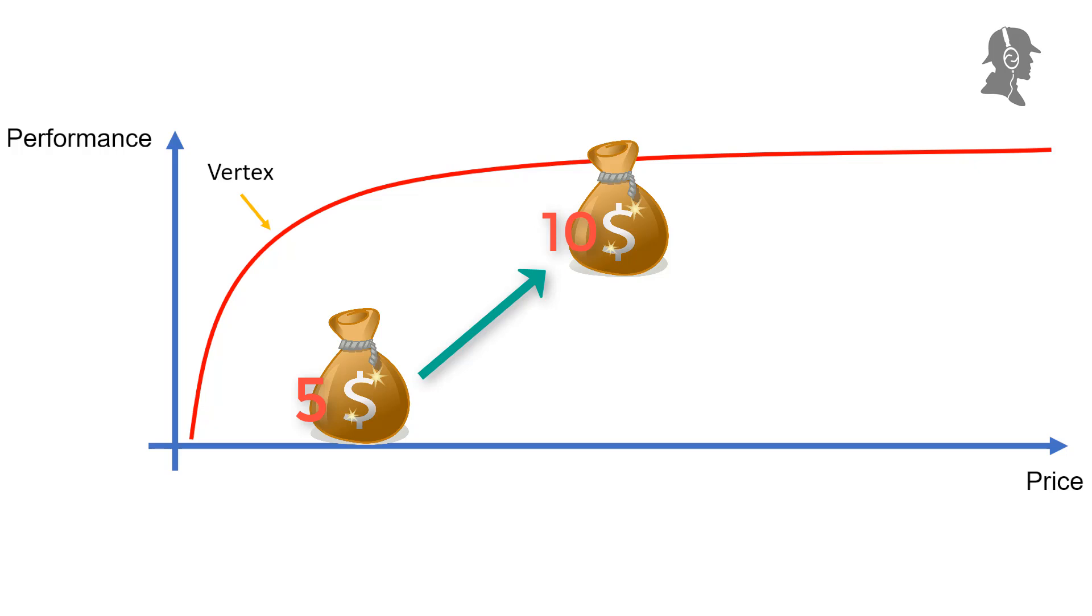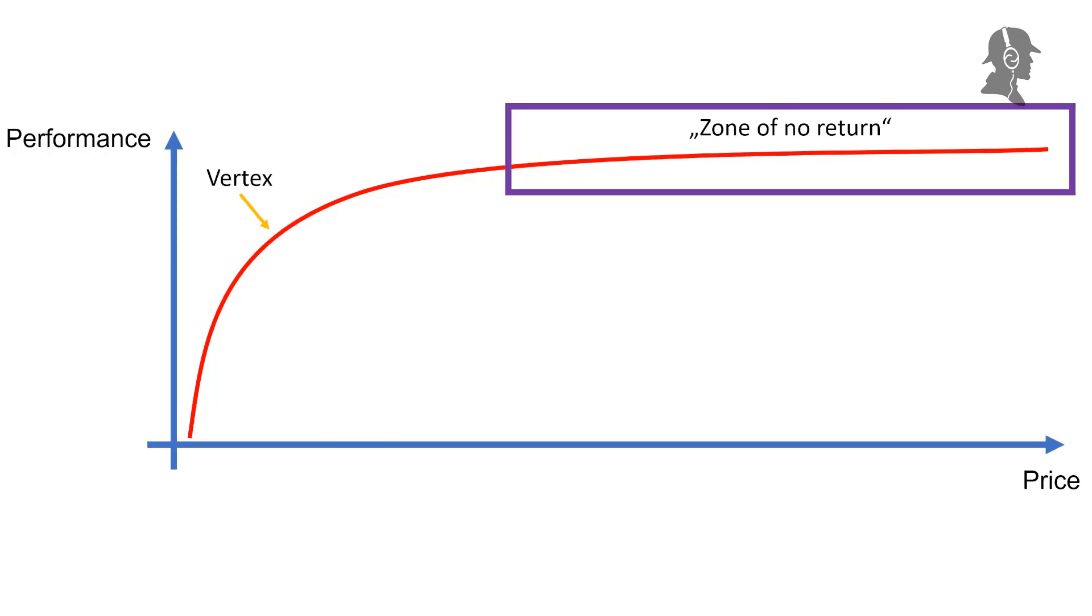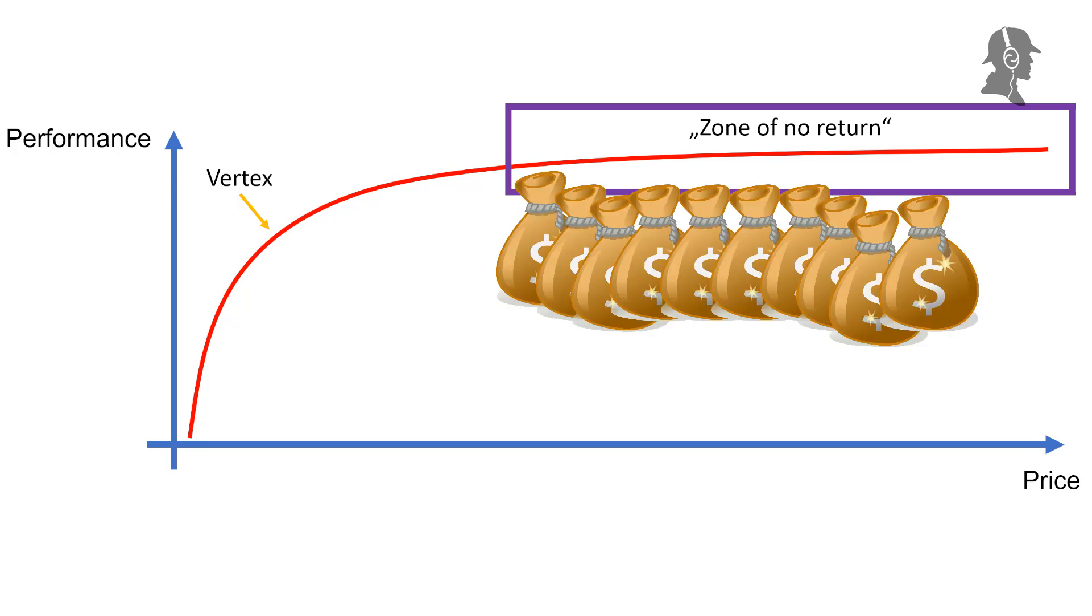However, if you come to a certain point, the vertex here, or the break-even point, I will not go into details now about how much this is. After that, if you spend $10, maybe you only get 8% better performance, or even worse, only 5%. So, that's the gist of diminishing returns. And if you go this line further up, there's something that I personally call this the zone of no return.